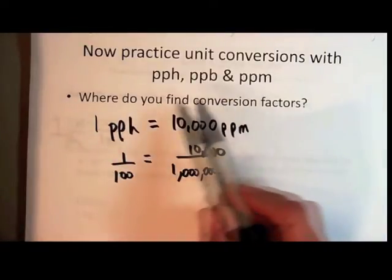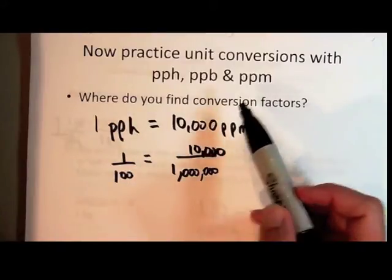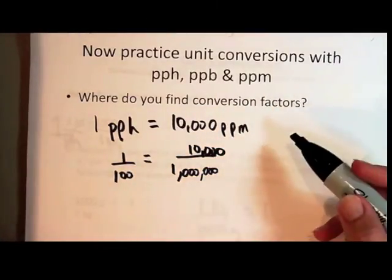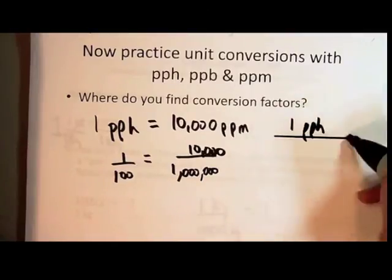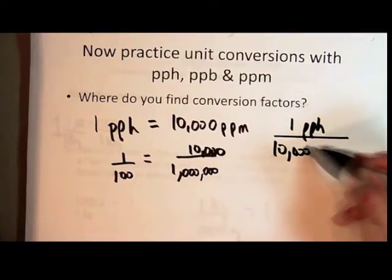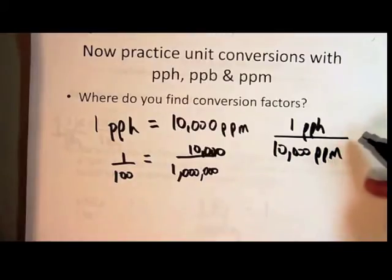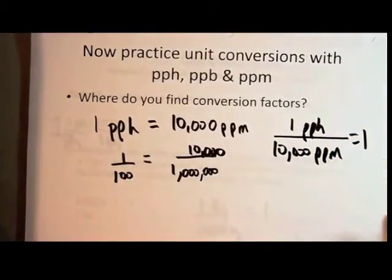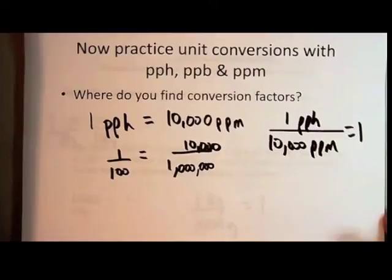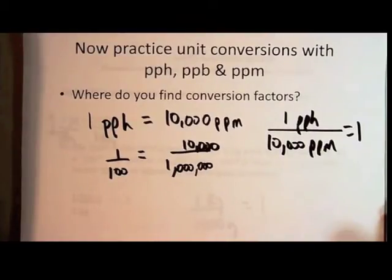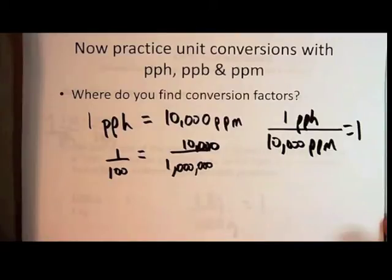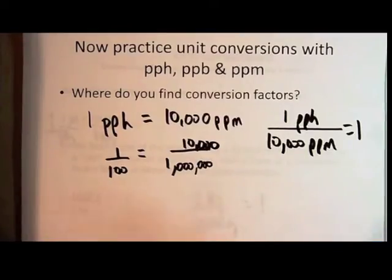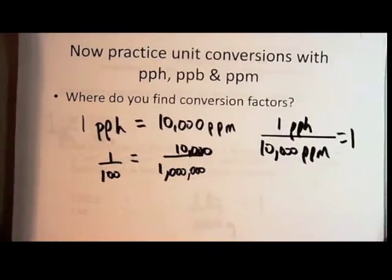So one part per 100 is the same as 10,000 parts per million. That's where we come up with this equality. And once you have that equality, you can write unit factors from that equality. One part per 100 over ten thousand parts per million is the same as one because it's an equality. So you can do conversions in a very analogous way that you do with the metric system going from PPH, PPB, PPM.